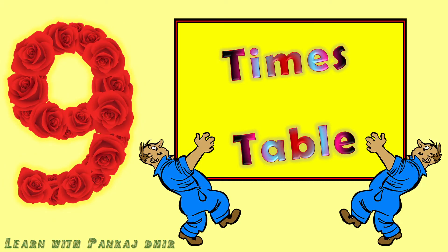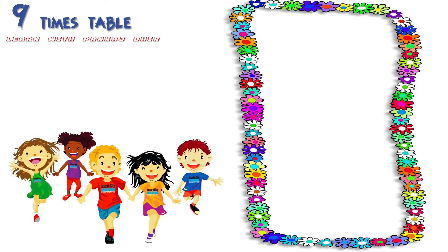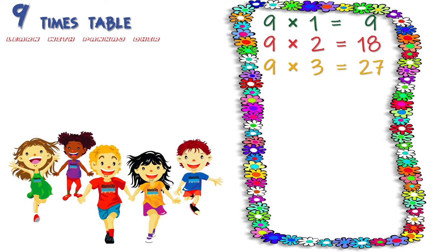9 times table. 9 ones are 9, 9 twos are 18, 9 threes are 27, 9 fours are 36, 9 fives are 45.